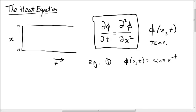And why is this a sensible thing to take? Well, if you differentiate this twice with respect to x, you're going to pick up a minus sign because you're differentiating sine twice, so you get minus phi. And if you differentiate it once with respect to t, you're going to pick up a minus sign from the e to the minus t, so you're going to get minus phi. So these two are equal, and this is a solution to the heat equation.